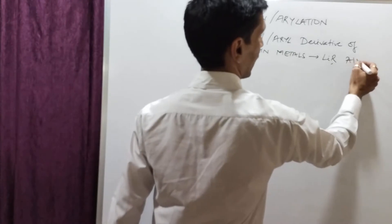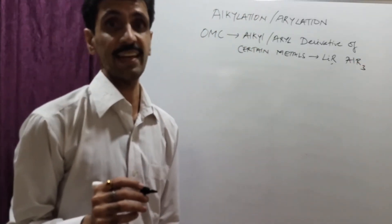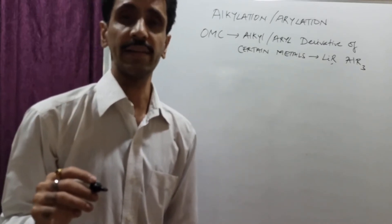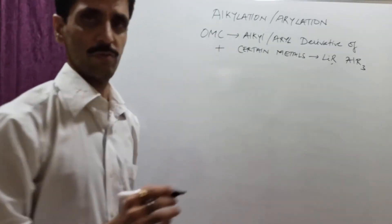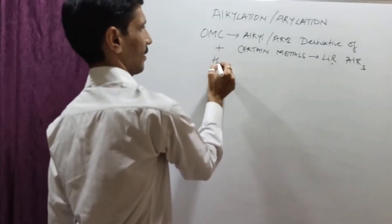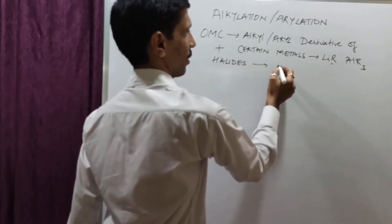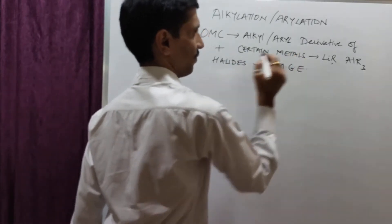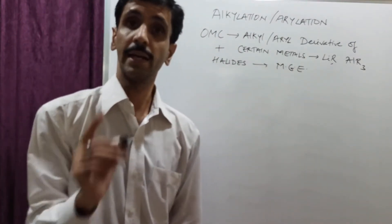Next is AlR3, aluminium, valency is 3. So we write it down as AlR3, where R is going to be an alkyl or the aryl group. Now, this organometallic compound is going to combine with the halides of the main group elements. Main group elements means S and P block elements.